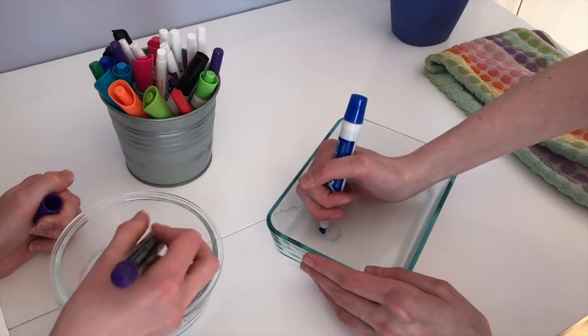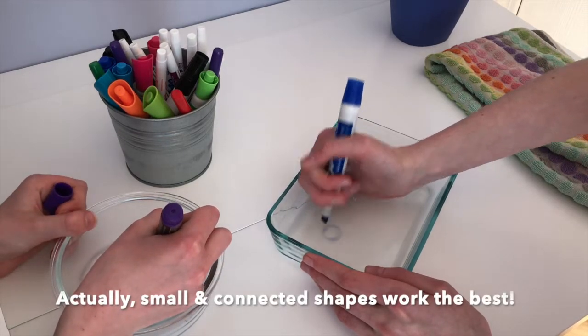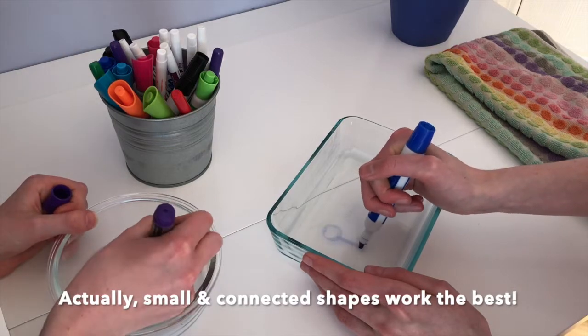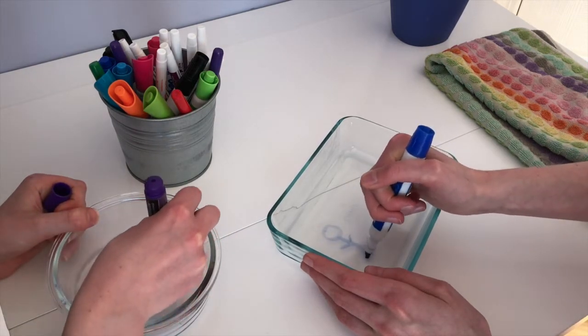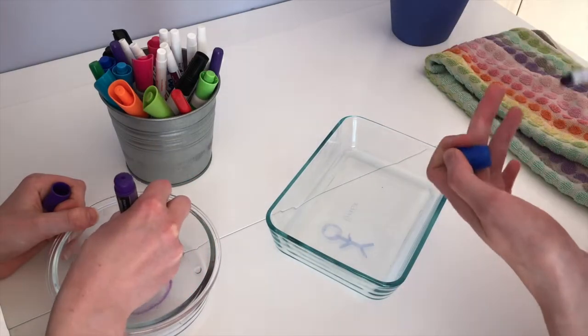So I'll do blue and you just want to draw something on the bottom of your glass dish. Stick figures work really well. A sun would work really well. Just make sure it's all connected.